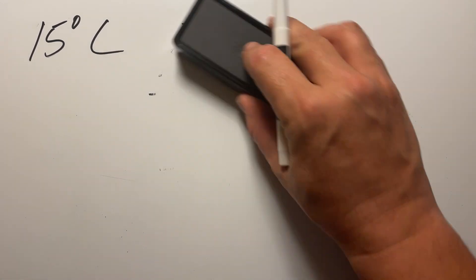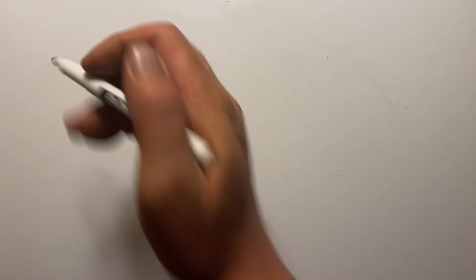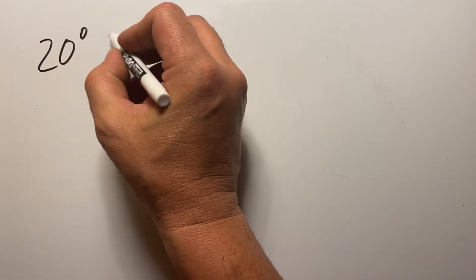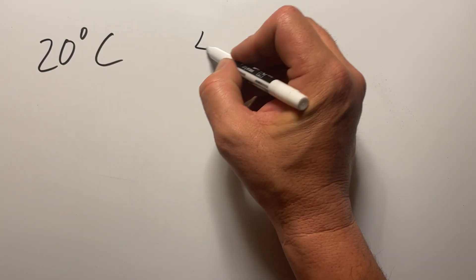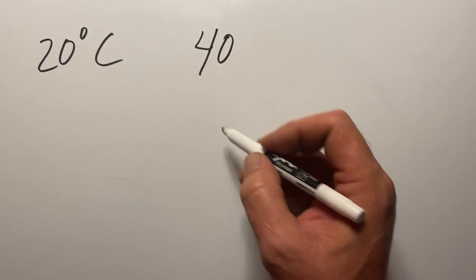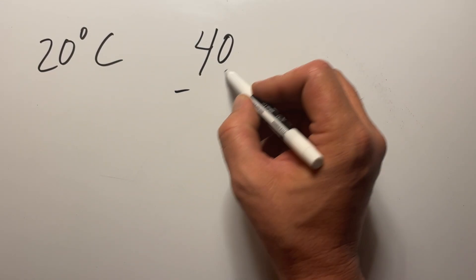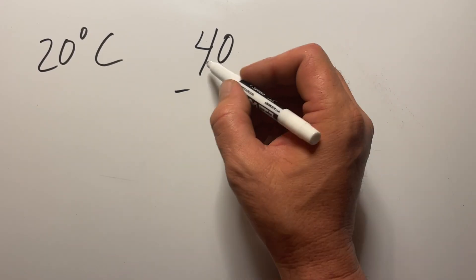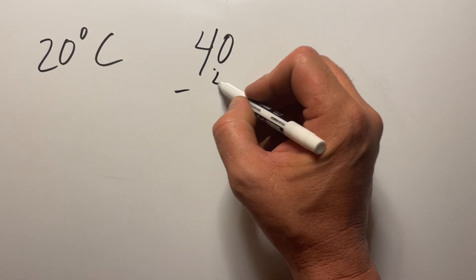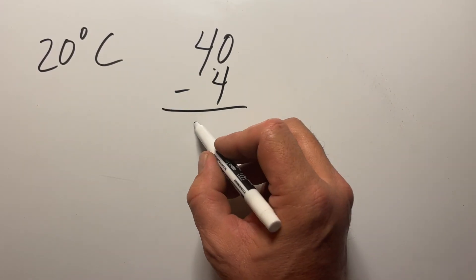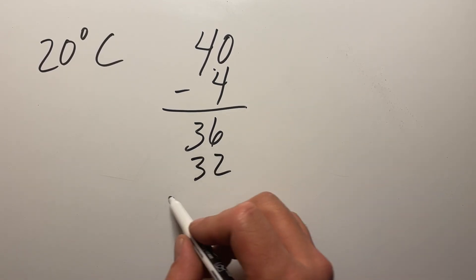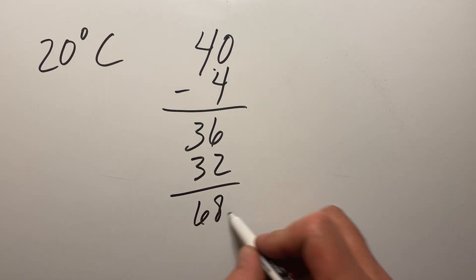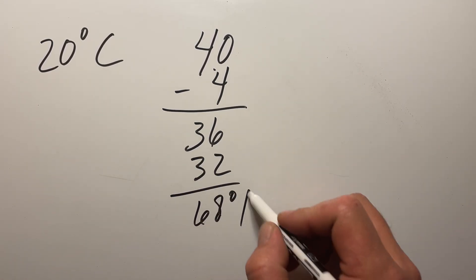Let's try another one — 20 degrees Celsius. We start by doubling: that becomes 40. Then move over one decimal place — the 40 becomes a 4. Subtract 4 from 40, that becomes 36. Add 32 back to it, and that becomes 68 degrees Fahrenheit.